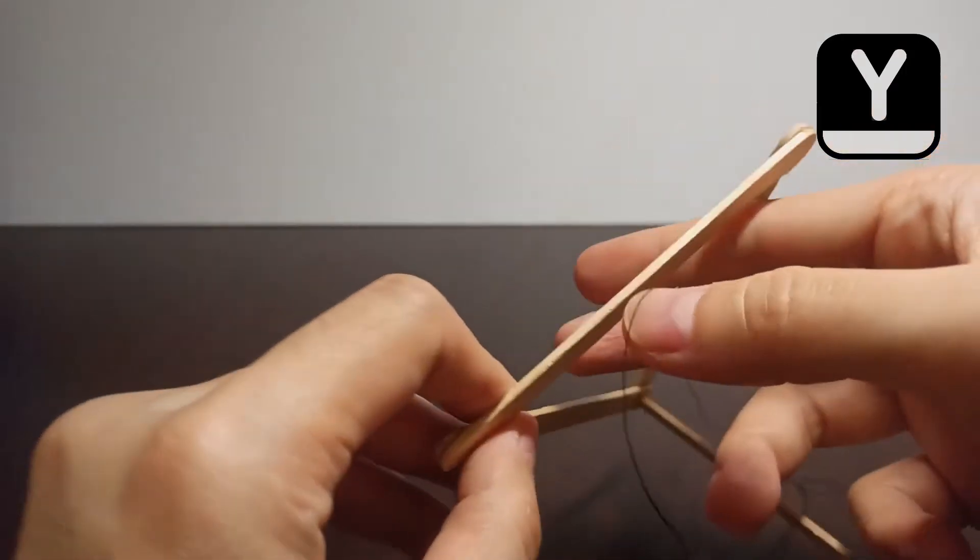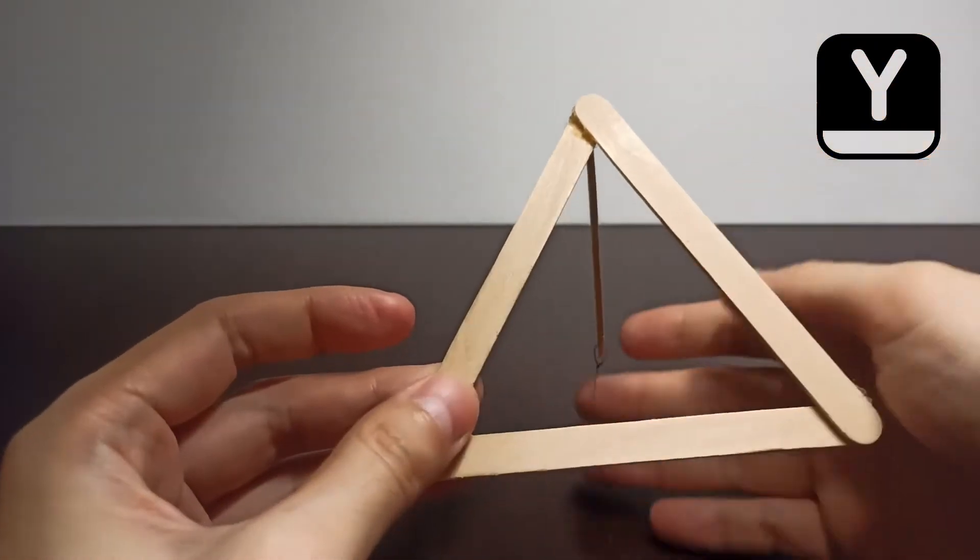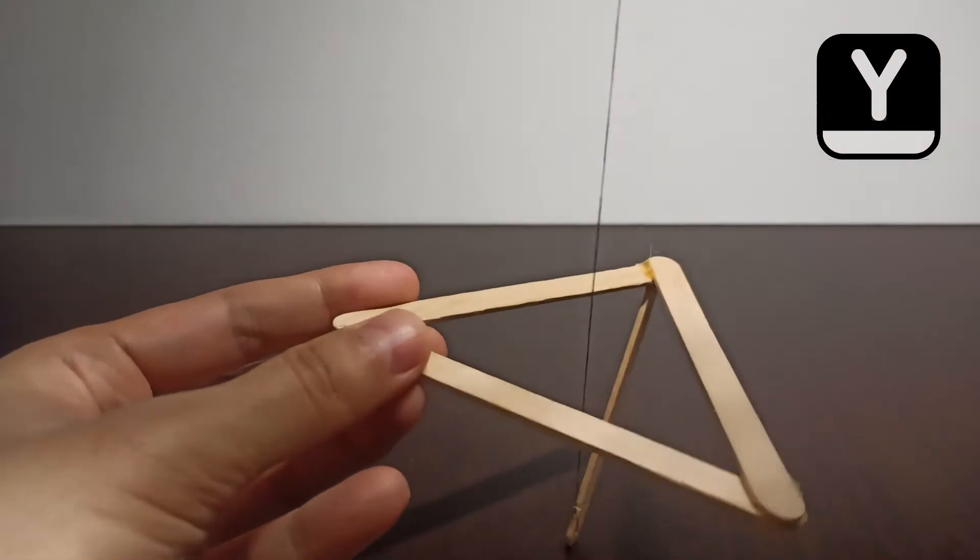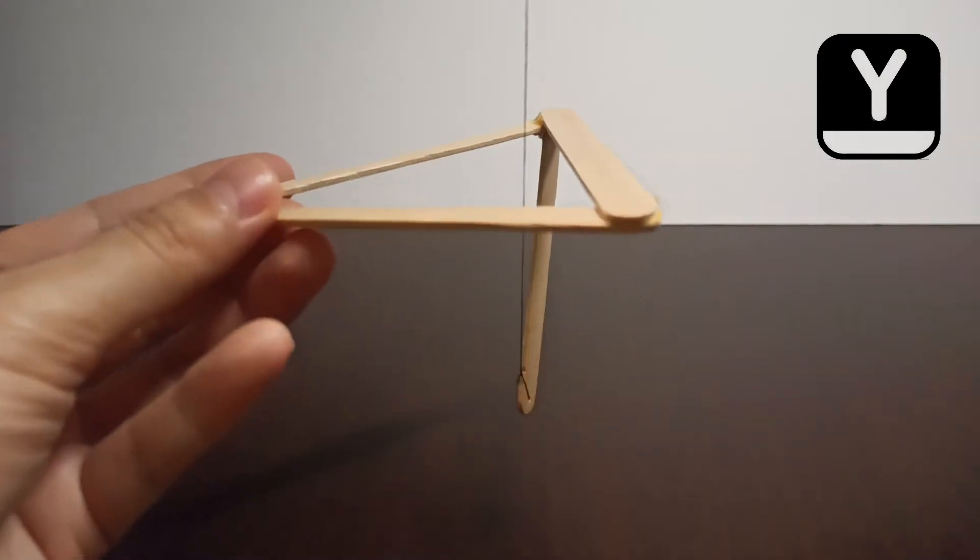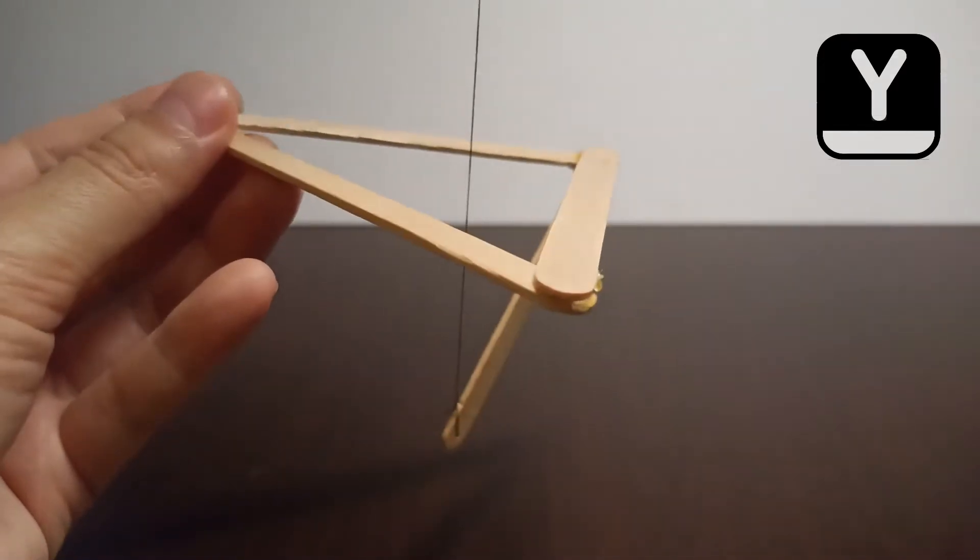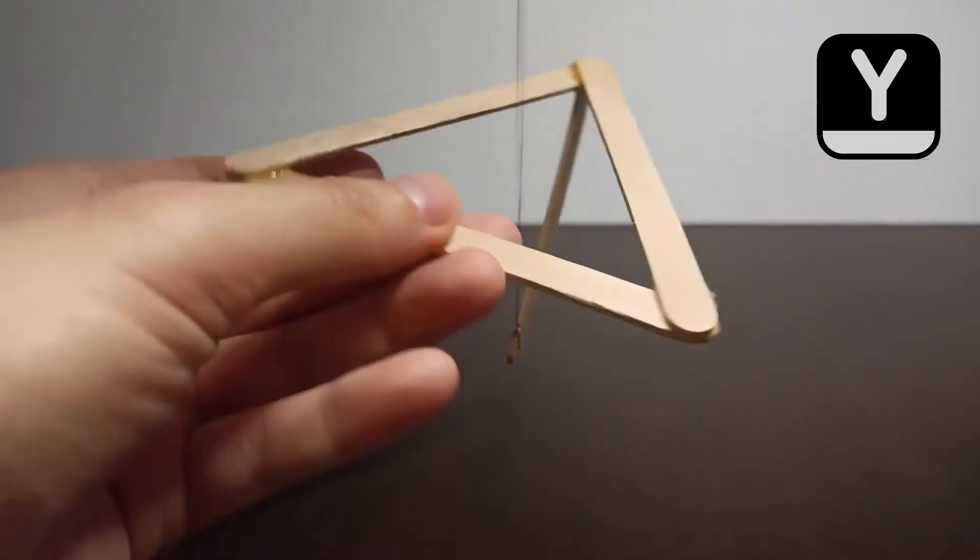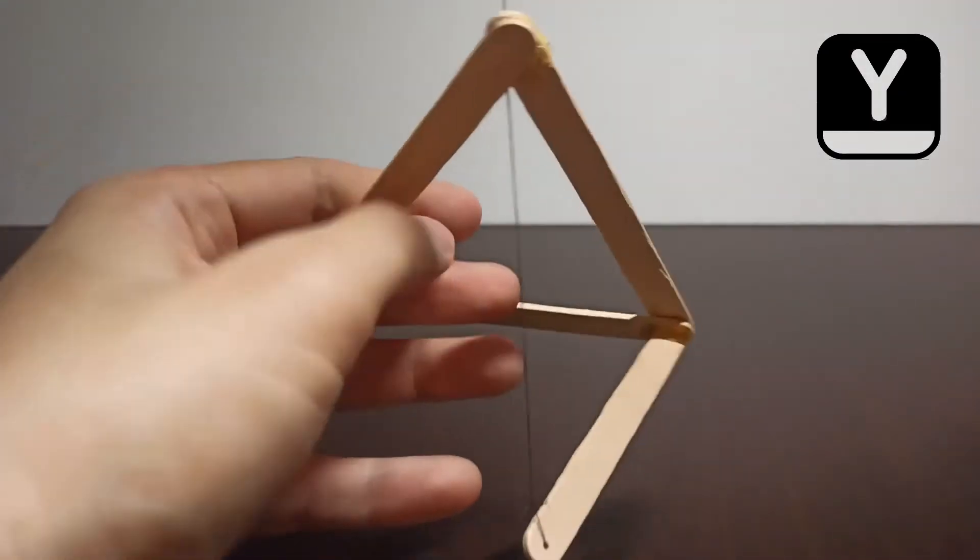But when I turn it upside down like this, the hanging point is now under the triangle and I'm still pulling it from the top. So now it will become unstable. If I let it go, it tends to tip over in every direction. So what can we do?